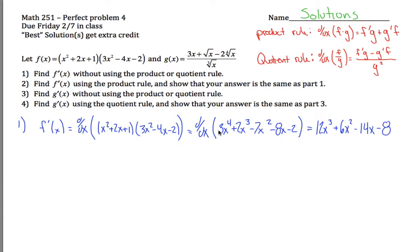This right here is f prime of x — the derivative of f. It wasn't too bad. I think in this case it might have been easier to figure this out without using the product rule. Of course, that's dependent on one thing: how good your algebra is — specifically, being able to go from the product form to the expanded polynomial form.